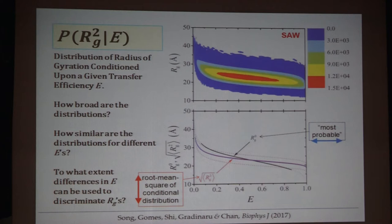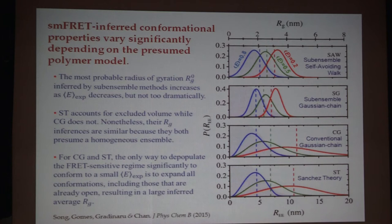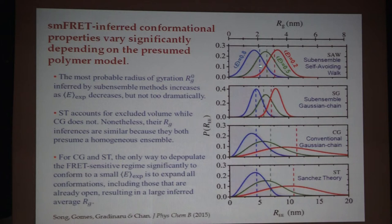Here are the results. We apply this to a protein of 90 residues. We call it the sub-ensemble approach because we divide the conformational space into sub-ensembles of R_G and R_ee. You can see that when the transfer efficiency increases from 0.2 to 0.8, the change in inferred R_G from this model is pretty narrow. We can also apply this to a sub-ensemble without excluded volume — it's more or less the same, but a bit narrower.